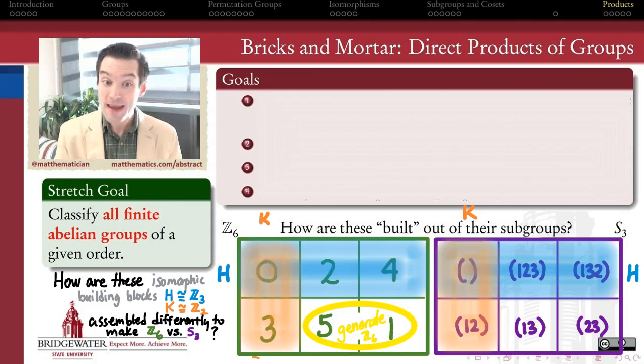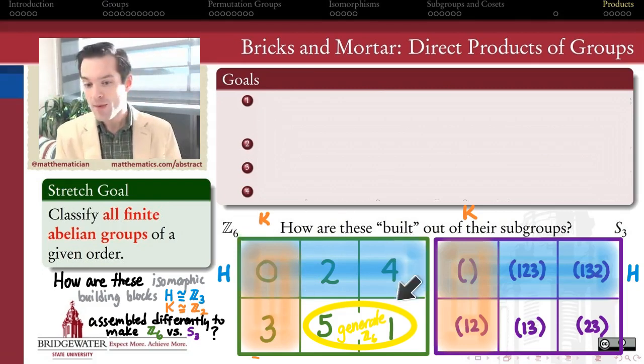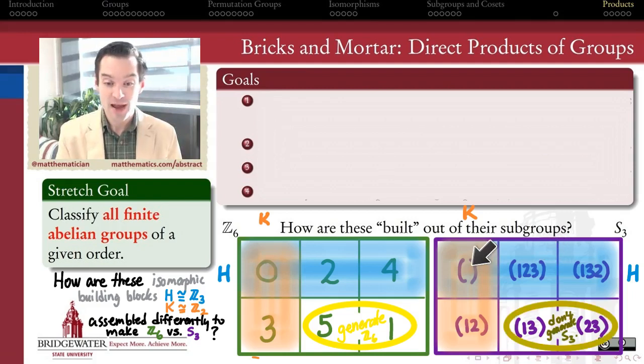So I can actually make a generator by combining together, using the operation of the group, an element from H and an element from K. But evidently we can't necessarily do the same thing over here. The reason we can't do it over here is that S3 is not a cyclic group.